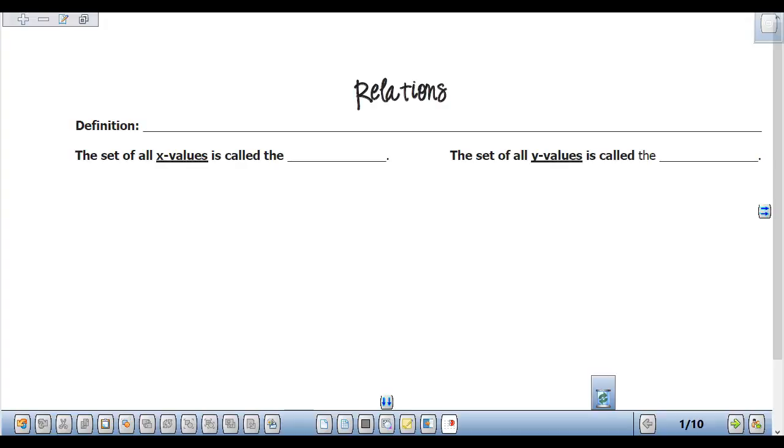All right. All the relation is, and this whole chapter is on functions and relations. This is a super quick chapter. We'll get through it by the end of next week. So all the relation is, is a set of ordered pairs.